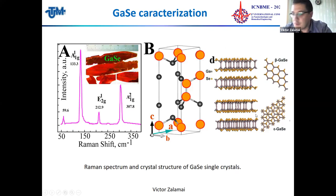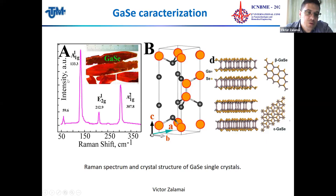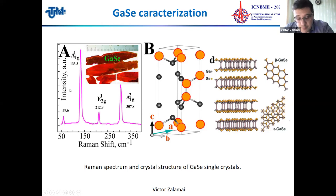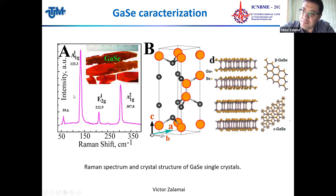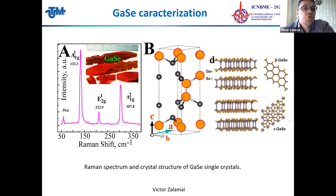The most common polytypes are beta and epsilon. In our case we have the epsilon polytype, because we measured the Raman spectra and the observed phonons correspond to the epsilon type of Gallium Selenide.